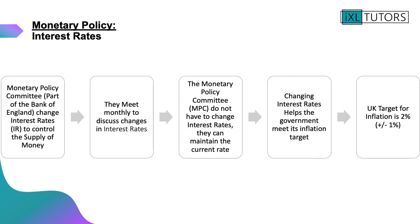In terms of interest rates, the Monetary Policy Committee, which is part of the Bank of England, changes interest rates to control the supply of money. They meet every month to discuss whether they would like to change interest rates; however, they do not have to change them and can maintain the current rate. Changing interest rates helps the government meet its inflation target, and the UK target for inflation is 2% plus or minus 1%.